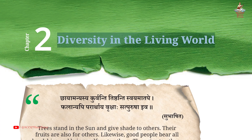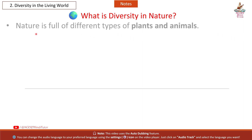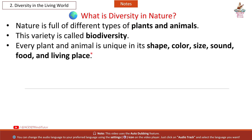Chapter 2: Diversity in the Living World — Short Notes and Revision from Class 6, Subject Science, Book Curiosity. What is Diversity in Nature? Nature is full of different types of plants and animals. This variety is called Biodiversity. Every plant and animal is unique in its shape, color, size, sound, food, and living place.